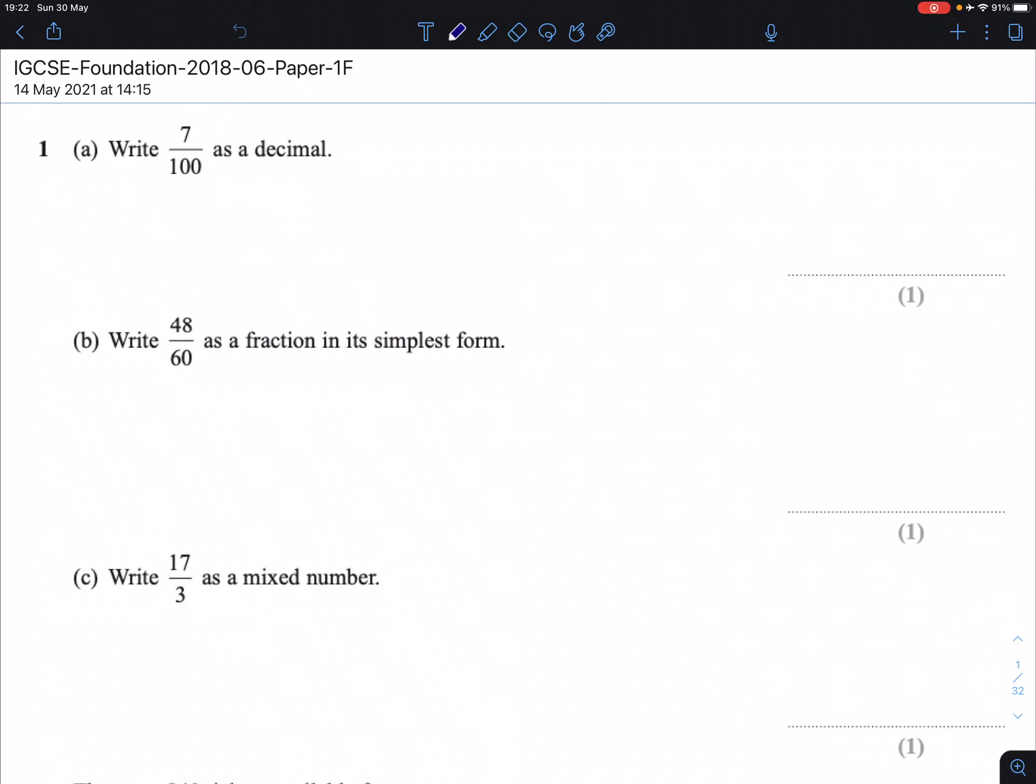Question 1. Write 7 out of 100 as a decimal. So whenever you've got a fraction you're going to be asked to write as a decimal, you are basically doing the division sum. So 7 divided by 100, that gives you 0.07.